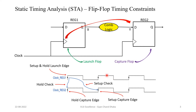Here is the basic slide showing the launch flop and the capture flop — a register-to-register timing path. The clock edge for register 1 is named clock edge 1 and for register 2 it is clock edge 2. The rising edge of clock edge 1 is the launch edge where data is launched from the launch flip-flop. At the same clock edge of register 2, the hold check is performed, and at the next clock edge the setup check is performed — these are called the hold capture edge and setup capture edge respectively.